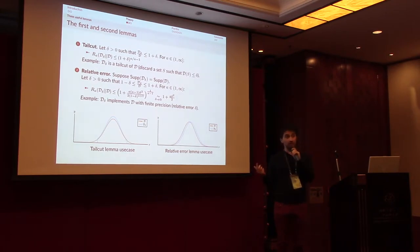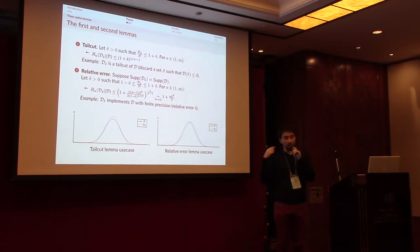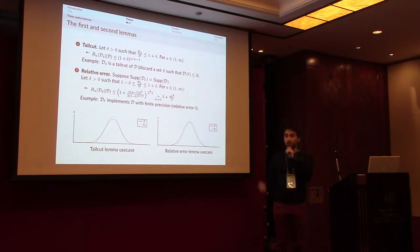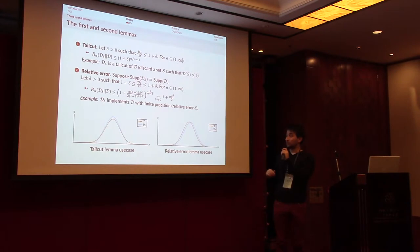A practical situation where this applies is when you perform computation using finite precision, which gives a relative error of δ. This lemma then tells you that the Rényi divergence between the perfect and the imperfect distributions is bounded by 1 + O(δ²).